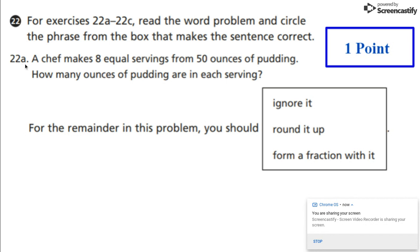22a: A chef makes 8 equal servings from 50 ounces of pudding. How many ounces of pudding are in each serving? For the remainder in this problem, you should ignore it, round it up, or form a fraction with it.